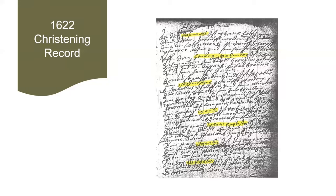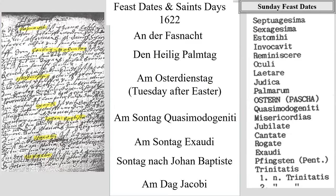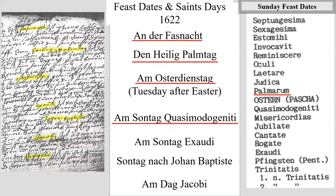This page, taken from a christening record in 1622, lists seven different feast dates. The highlighted feast dates are written in Roman print, and a list of Sunday feast dates is shown. The first feast date is called Fasnach — it is not listed on the Sunday feast date page. The second is Palmtag or Palm Sunday, listed as Palmyram — the Sunday before Easter. The third feast date is Osterdienstag, or the Tuesday after Easter. After determining the date for Easter in 1622, Osterdienstag would be just two days later. The fourth feast date is Quasimodo Geneti, which is the Sunday after Easter. The fifth feast date is Exati, which is the sixth Sunday after Easter.